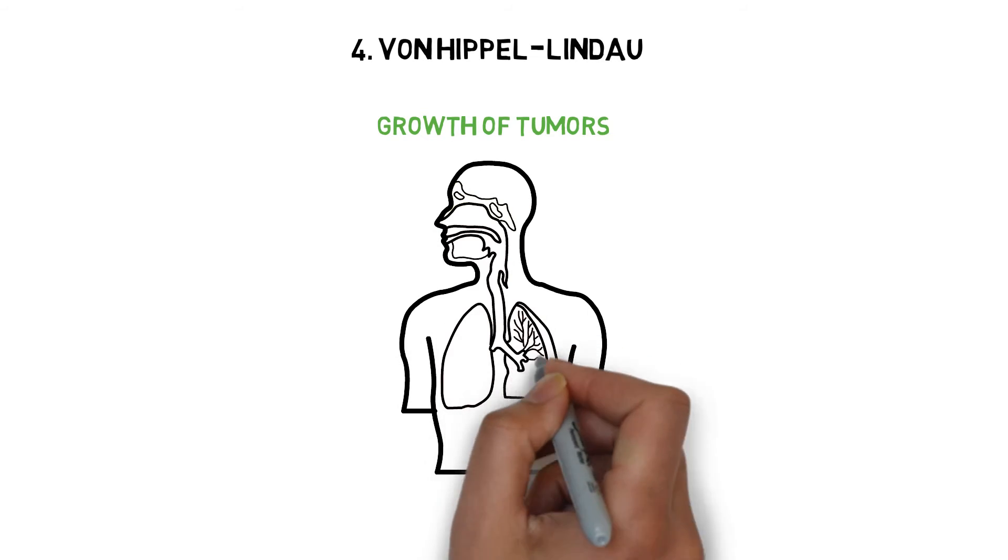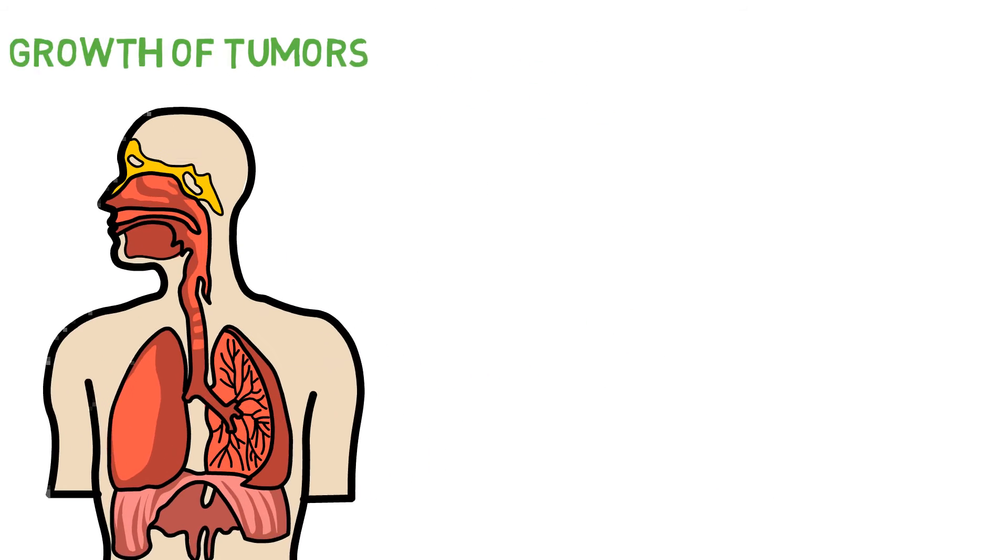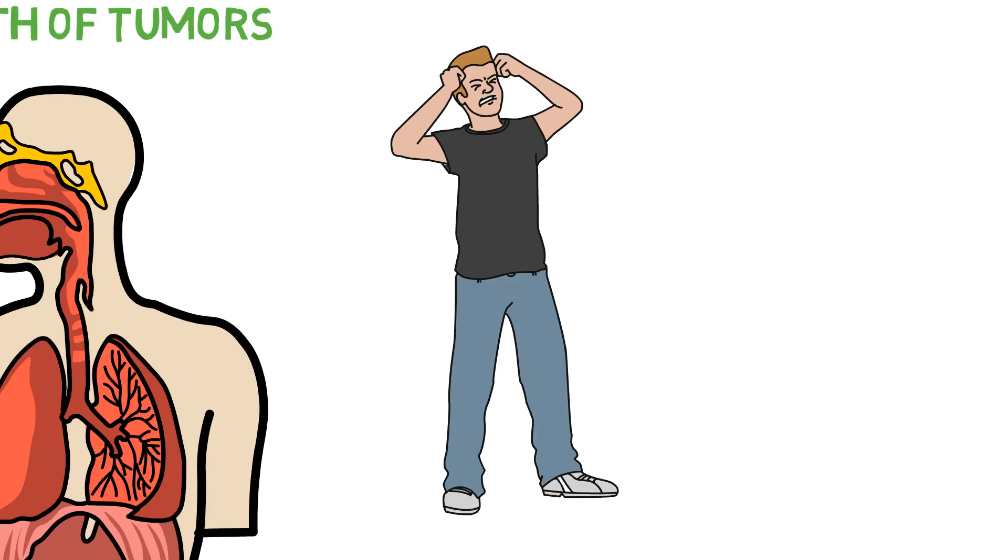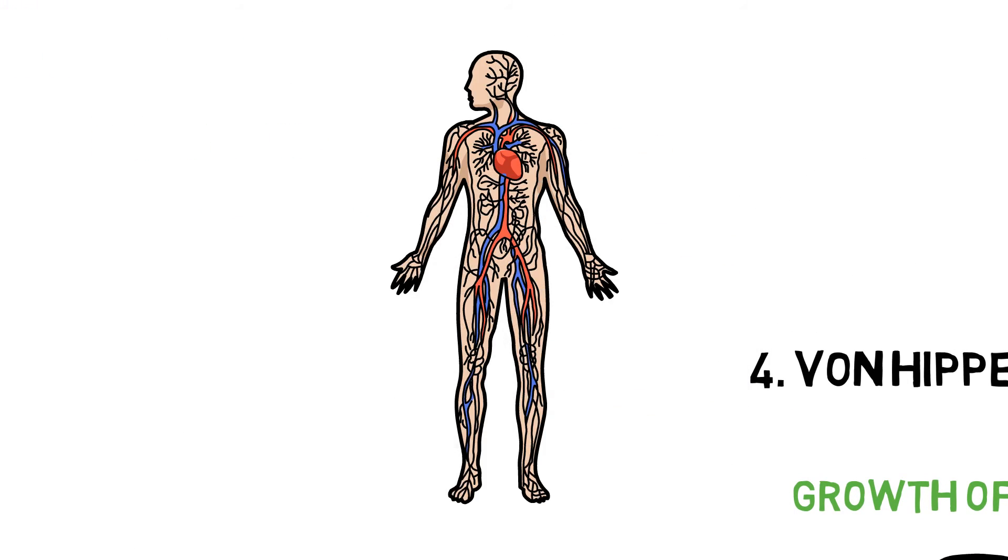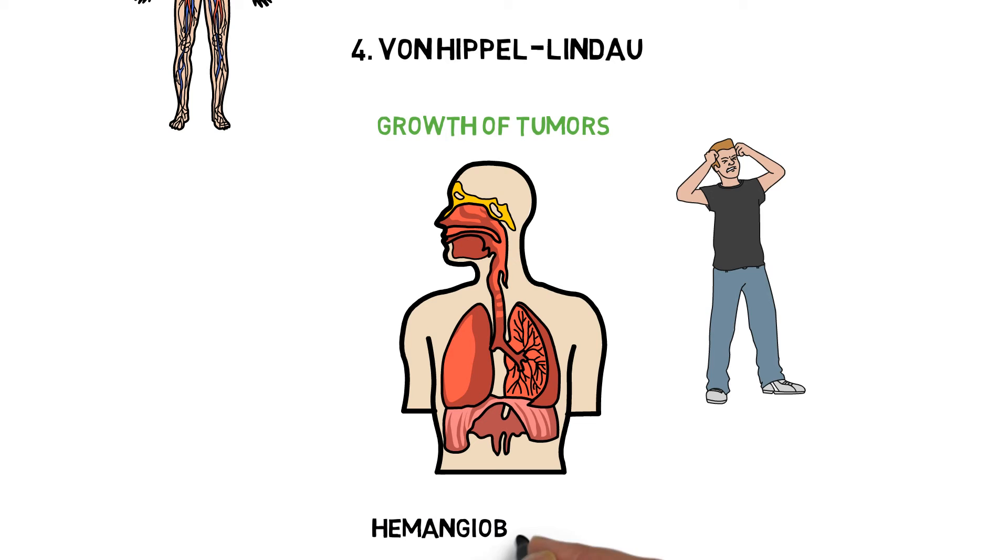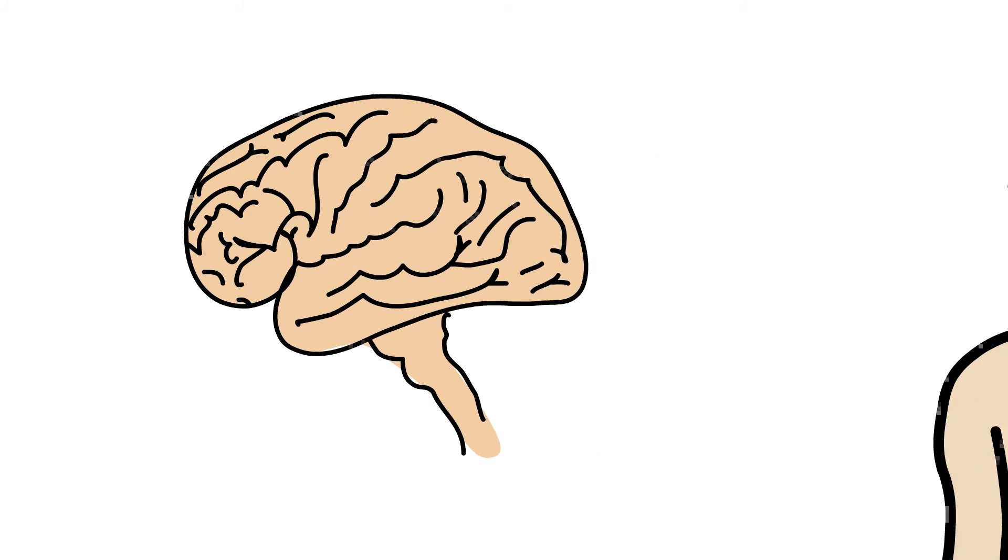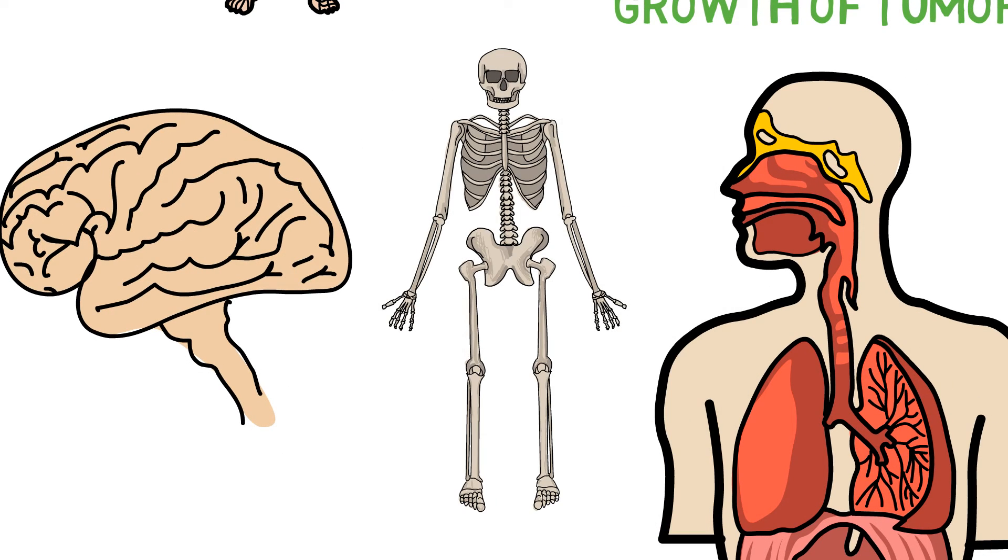Number 4: Von Hippel-Lindau. This genetic condition is characterized by the growth of tumors in various parts of the body, which, in itself, is quite dangerous and painful to say the least. Multiple tumors grow in the central nervous system and are often benign. These tumors are known as hemangioblastomas, and they can start growing in the retina, brain, and spinal cord. Again, there is no known treatment for this disease.